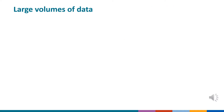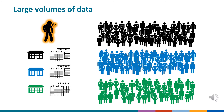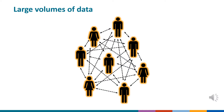Public health officials frequently need to work with large volumes of data. Location-based contact investigations may identify hundreds of potential contacts at multiple locations such as workplaces, schools, churches, shelters, and correctional facilities where people congregate. And individual TB clusters and outbreaks can involve many patients, making epidemiologic links among patients more difficult to clarify and transmission networks more challenging to describe.